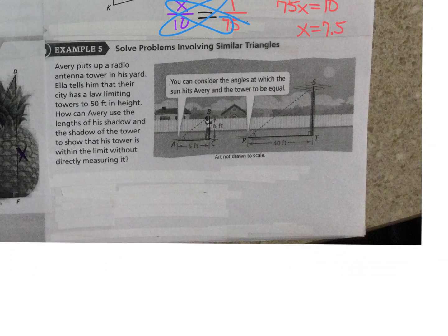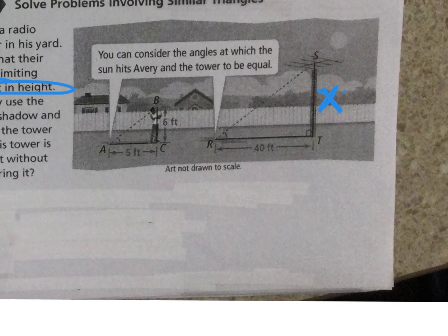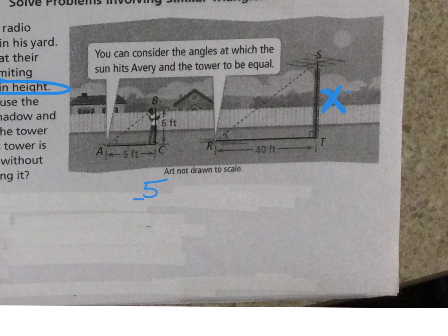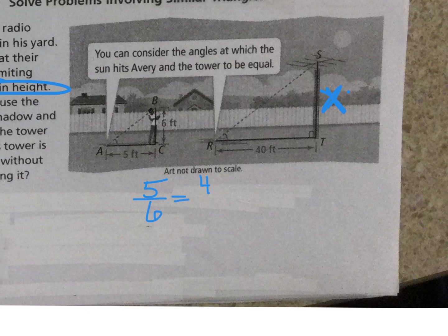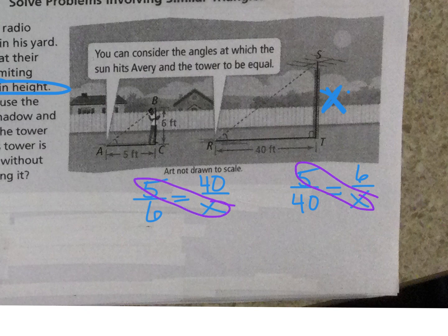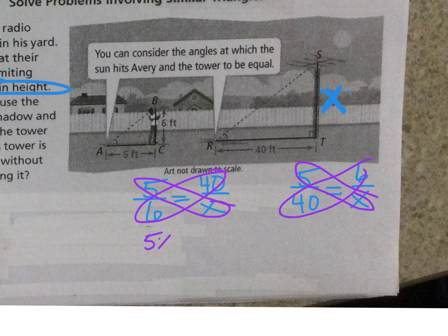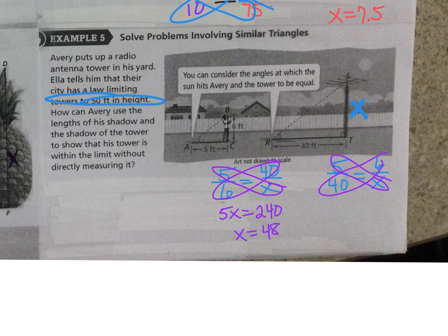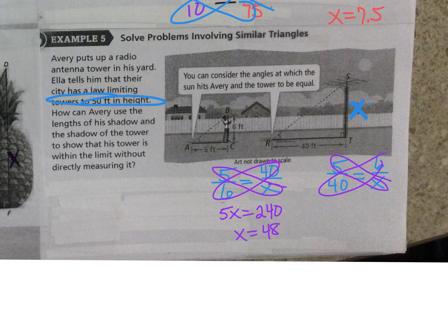So this one, it says the tower can't be more than 50 feet. So I need to find the height of the tower. So you could do shadow is to height as shadow is to height. Or you could do shadow is to shadow as height is to height. And if you see, all these cross multiplication are the same. So 5X equals 240. So X equals 48. And it is less than 50, so we're good to go on that.